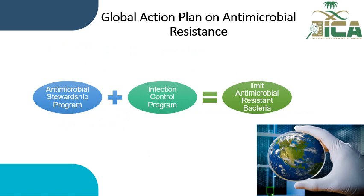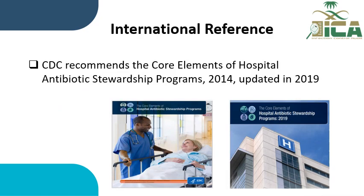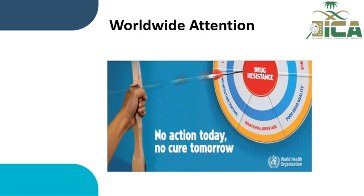As a global action plan to limit antimicrobial resistance, we need two effective programs: an effective antimicrobial stewardship program and an effective infection control program. Our international reference is the CDC. CDC recommends the core elements of antibiotic stewardship programs, first published in 2014 and updated in 2019. It's a worldwide attention and the CDC recommends applying ASP strategies in all hospitals regardless of size.